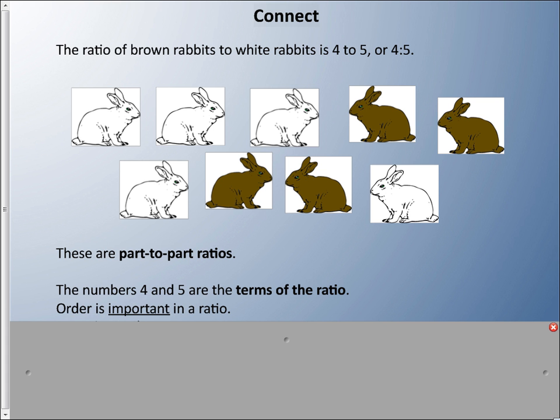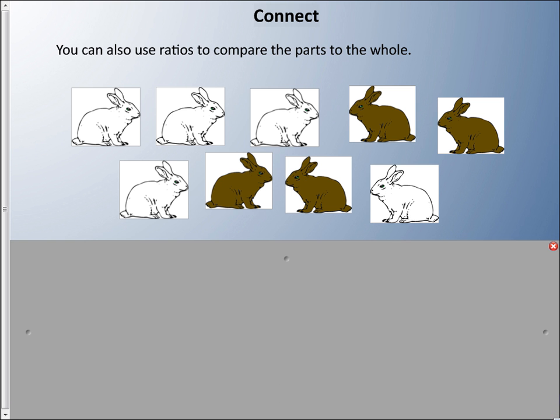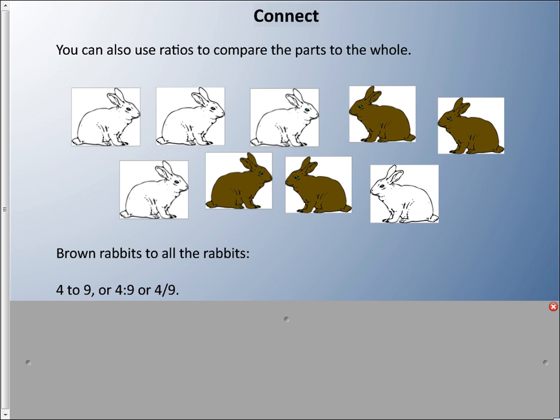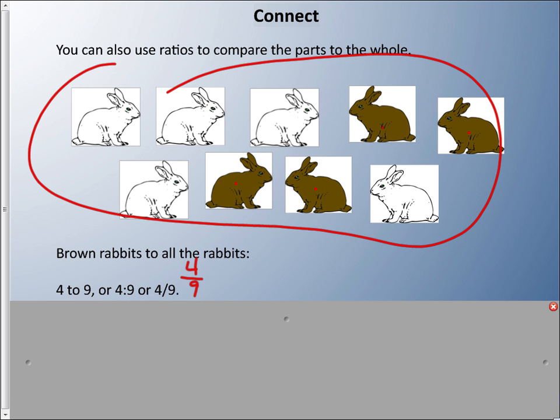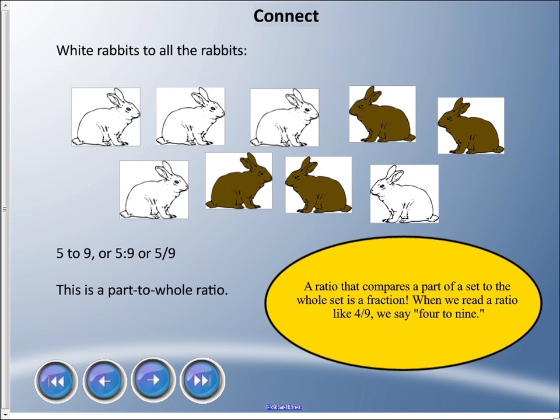We can also use ratios to compare the parts to the whole. For example, brown rabbits to all the rabbits is 4:9 or 4/9 like a fraction. I have one, two, three, four brown rabbits to all nine rabbits. We call this a part-to-whole ratio.